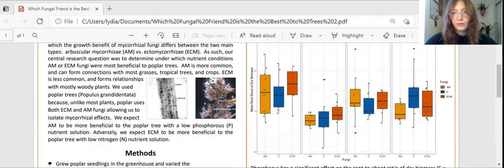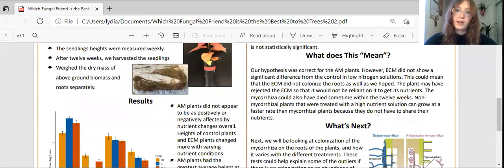These results confirm part of our hypothesis with the AM plants but not for the part with the ECM plants. This could be because the ECM plants were rejected by the poplar trees and did not colonize the roots, but it could also be because at some point in the experiment, the ECM had died.